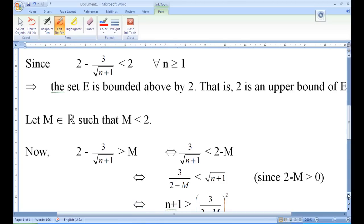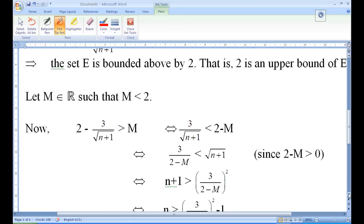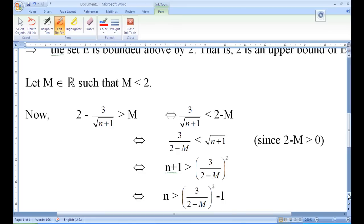So, just cross-multiply: 3 over 2 minus M is less than square root of n plus 1. And then, squaring both sides, the inequality is preserved because both numbers are positive. So, making n the subject, we find that n is greater than 3 over 2 minus M square minus 1.